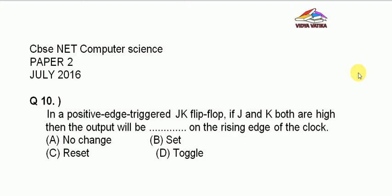The question is: In a positive edge triggered JK flip-flop, if J and K both are high, then the output will be blank on the rising edge of the clock. We are given four options: No Change, Set, Reset, or Toggle.